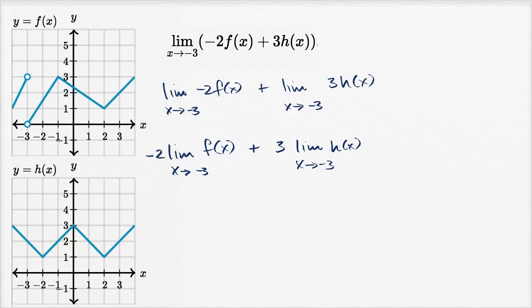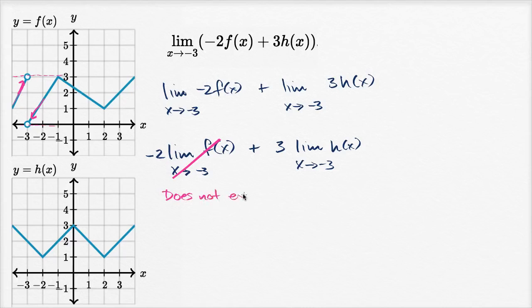For f(x) as x approaches negative three: when we approach from the left, the function seems to be approaching three. When we approach from the right, the function seems to be approaching zero. Our left-hand and right-hand limits are approaching different values, so this limit does not exist.